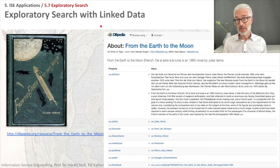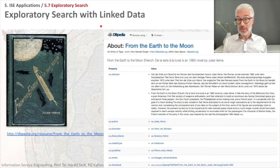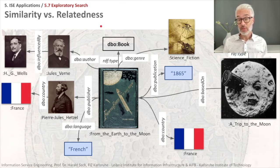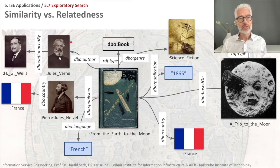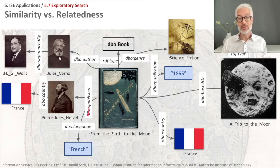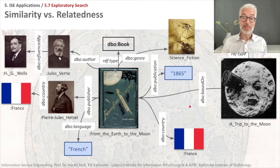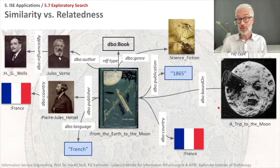How can we implement exploratory search based on a knowledge graph? Using the DBpedia entity for 'From the Earth to the Moon,' there are many interesting relations: the author Jules Verne, other authors influenced by Verne like H.G. Wells, the publisher, the country of publication, the original language (French), date of publication, genre, and other works based on this book — including the film 'A Trip to the Moon' by Georges Méliès from 1902, one of the very first science fiction movies. You can find it on YouTube.